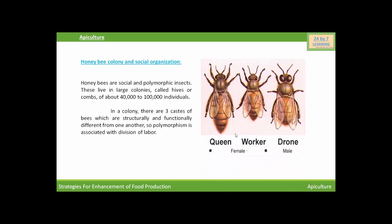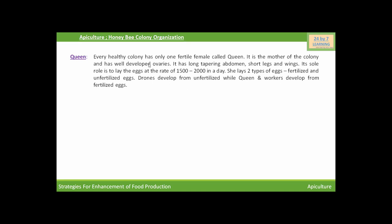There are three castes of honeybees: queens, workers, and drones. The most important member of the colony is the queen. Every healthy colony has only one fertile female called the queen. It is the mother of the colony and has well-developed ovaries. It has a long tapering abdomen, short legs and wings. Its sole role is to lay eggs at the rate of 1,500 to 2,000 in a day. She lays two types of eggs — fertilized and unfertilized. Drones develop from unfertilized eggs, while queens and workers develop from fertilized eggs.